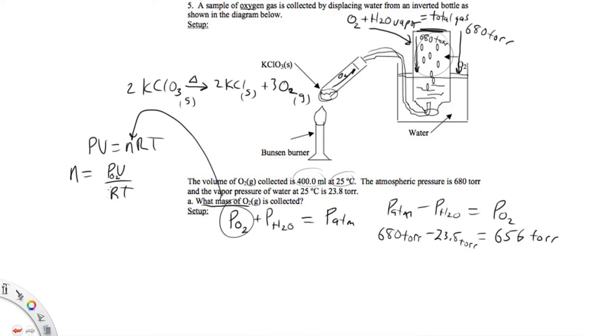So now we know what the pressure of O2 is and the volume is 400 milliliters and we know what R and T are. So I'm going to take 656 torr and I need to change that to atmospheres.